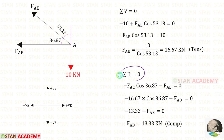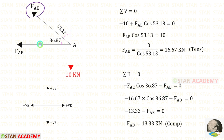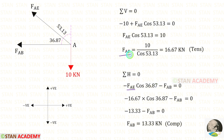Now let us apply sigma H = 0. FAB is acting towards the left side, so it will be negative. FAE is inclined; to make it horizontal we need 36.87°. It is acting towards the left side, so it will be negative, and we multiply with cos 36.87°. We have already found FAE = 16.67 and it is tensile. Applying that, for FAB we will get a negative value — that means it is compressive.